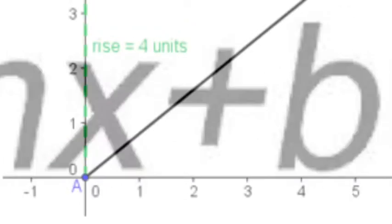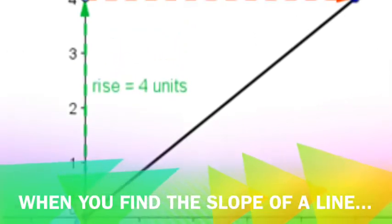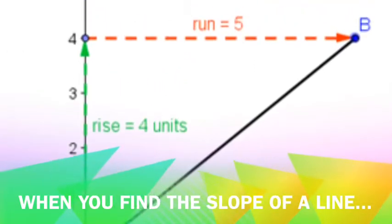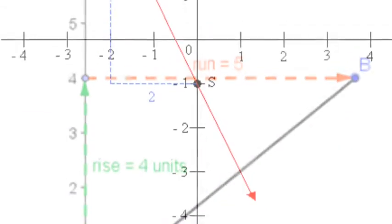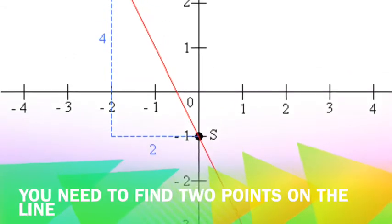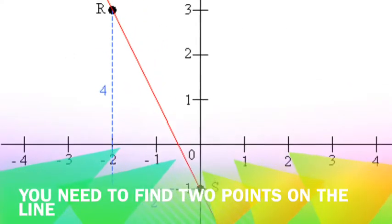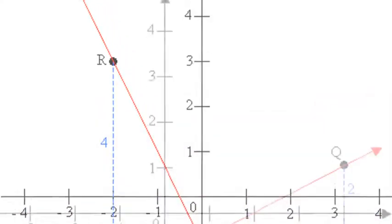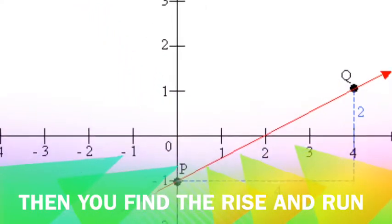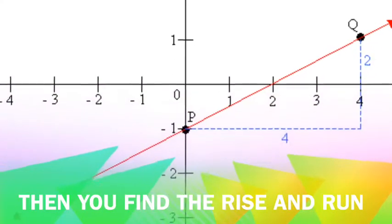Slopes. When you find the slope of a line, you need to find two points on a line. Then you find the rise and the run.